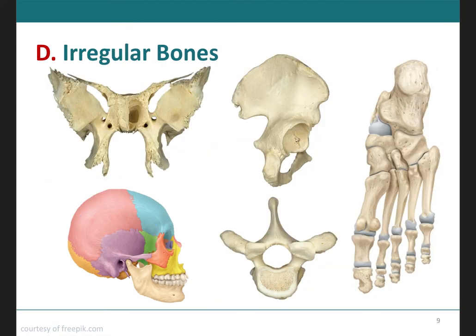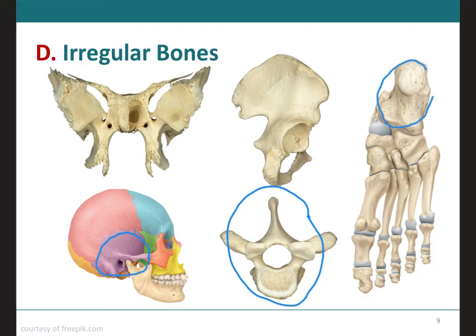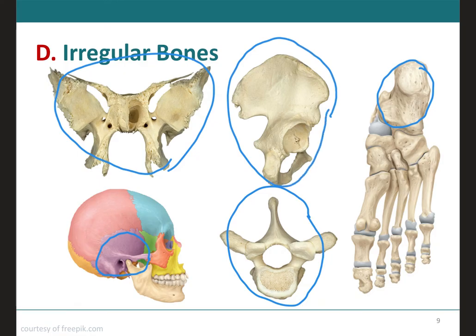Irregular bones have complex shapes and cannot be grouped into any of the three previous categories. They also vary in the amounts of spongy and compact bone they contain. Examples include the vertebrae, some facial bones like the temporal, the calcaneus or heel bone, and the sphenoid, which has a butterfly shape and is a cranial bone. The coxal bone can be considered either a flat bone or an irregular bone.